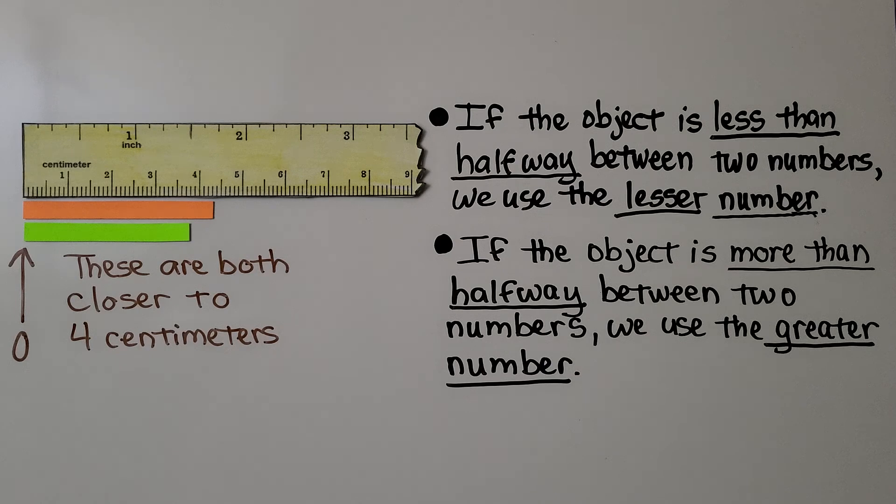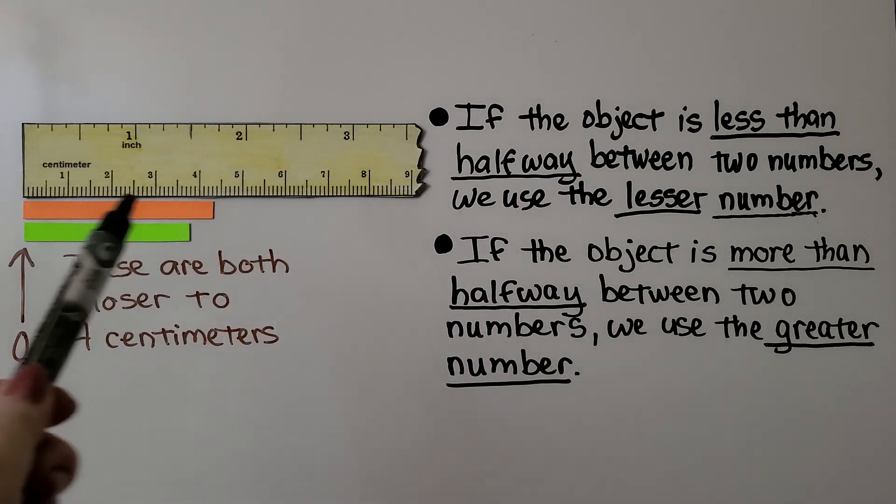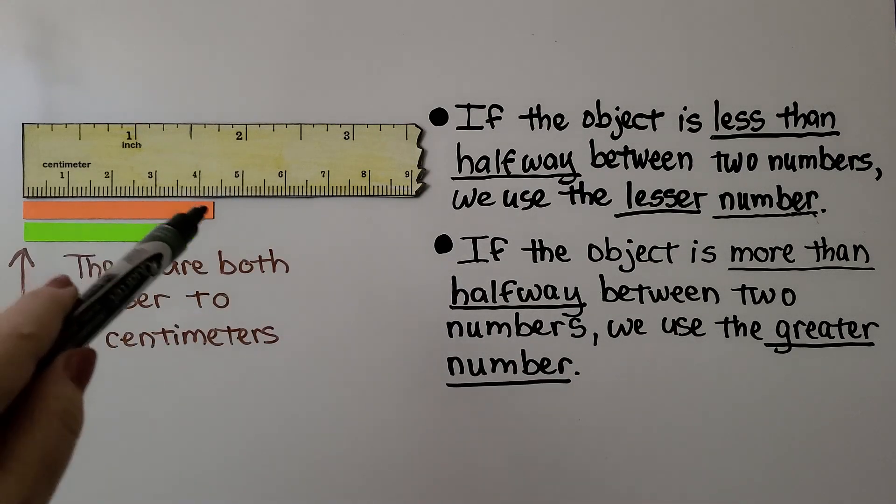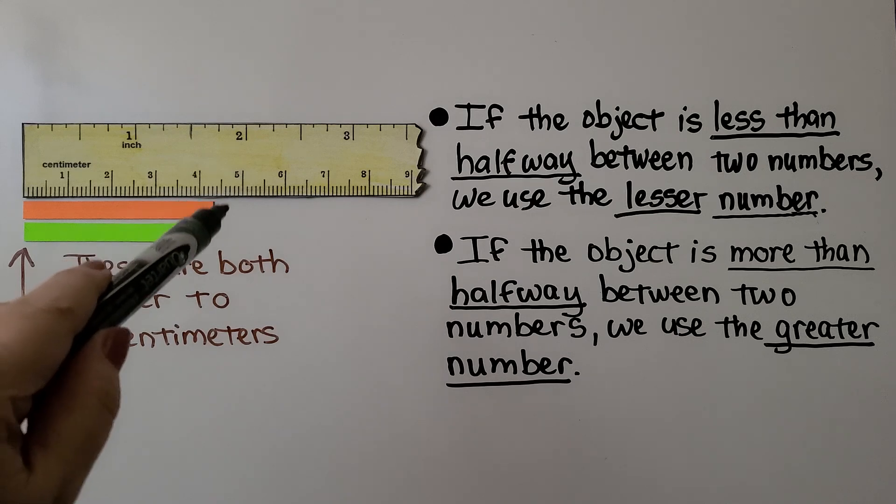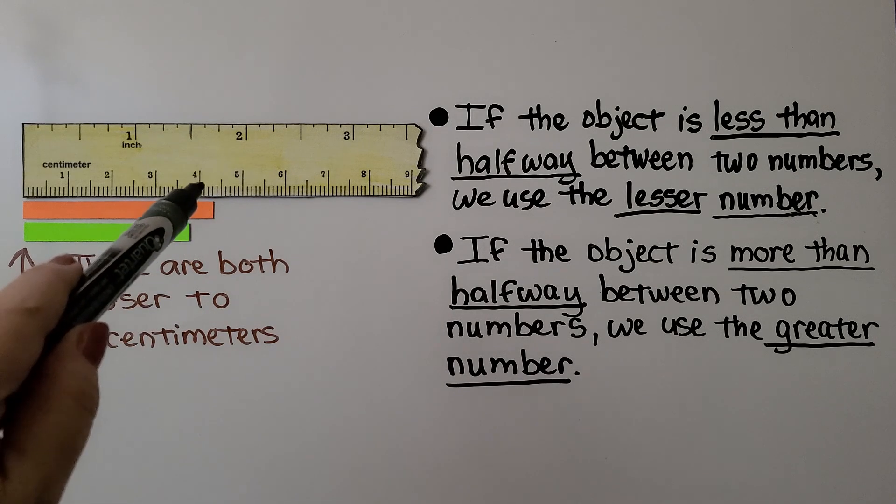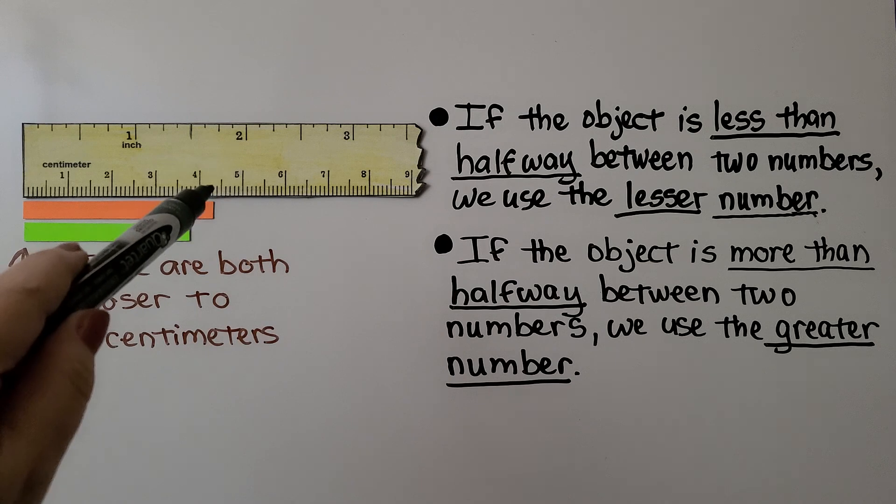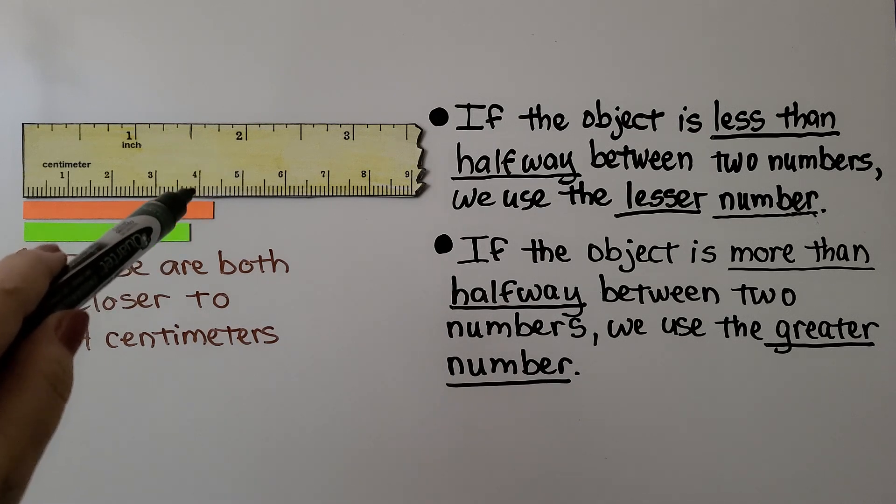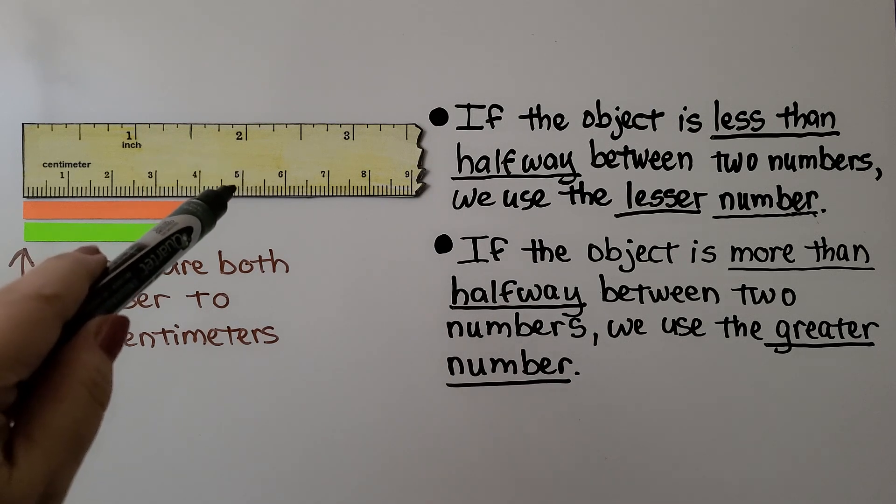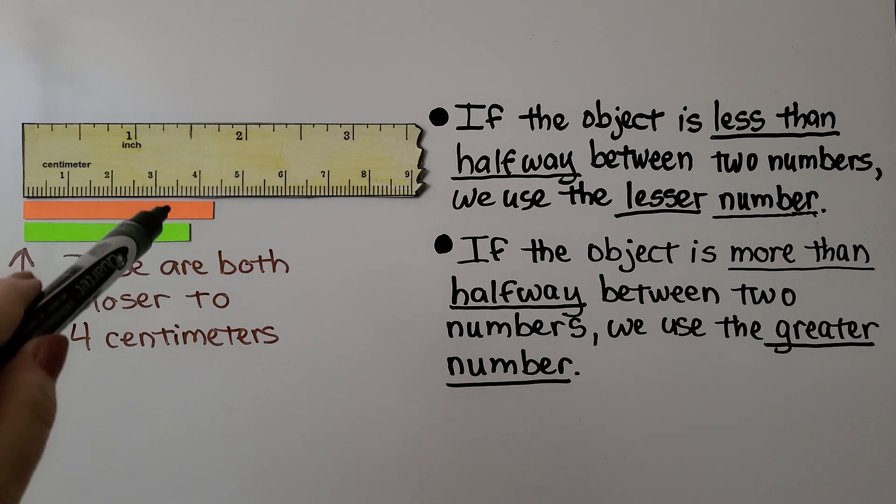We're measuring to the nearest centimeter, so here's centimeters, and if we look, here's a halfway mark between 4 and 5. And if you look at this orange bar, it hasn't gotten to the halfway mark. It's closer to 4 than it is to 5, so we would say to the nearest centimeter, the orange one is 4 centimeters.